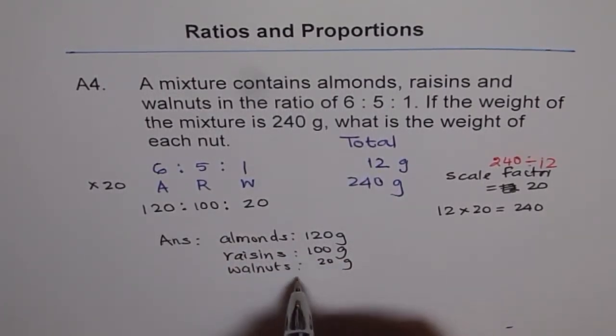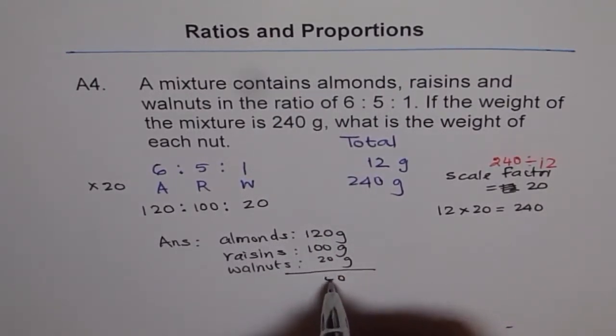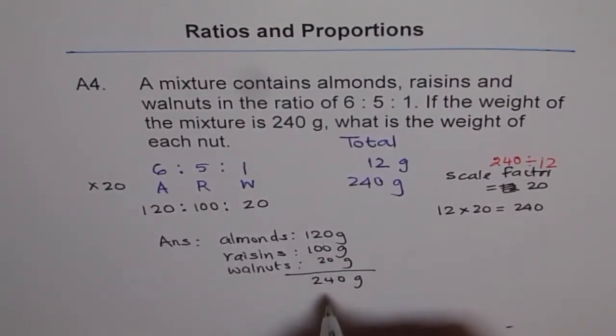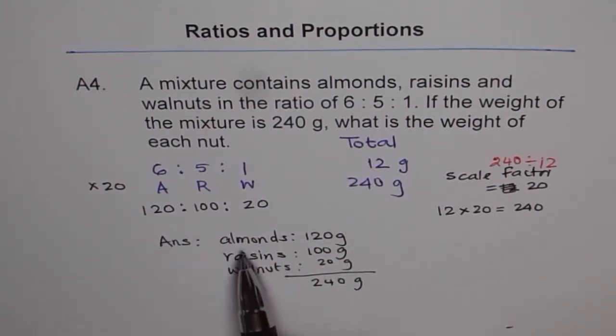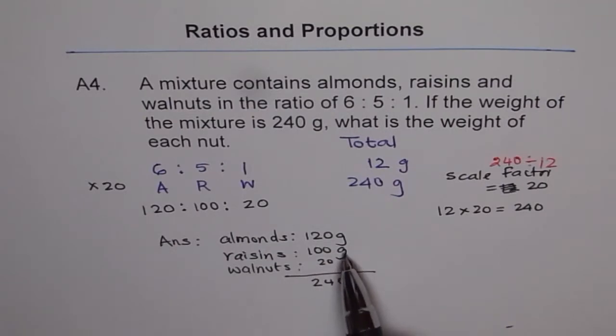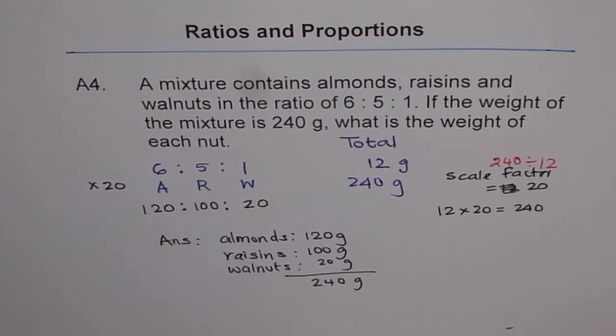Do you see? If you add all of them, you can check, you get 240 grams. So in a mixture of 240 grams, almonds are 120 grams, raisins 100 grams, and walnuts are 20 grams. And the ratio is 6 is to 5 is to 1.